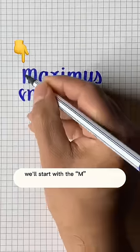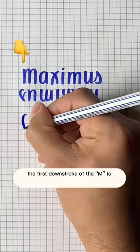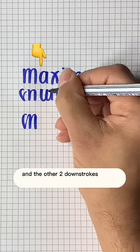We'll start with the M to the U and the S. The first downstroke of the M is curled slightly to make the cursive S upside down, and the other two downstrokes match with the U.